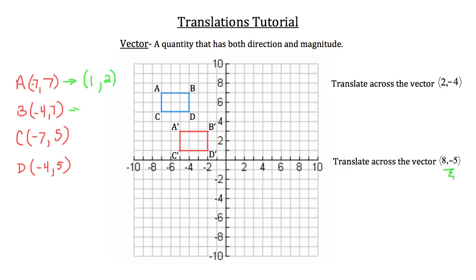Now let's do B: -4 plus 8 is positive 4, and 7 minus 5 is 2. For C: -7 plus 8 is positive 1, and 5 minus 5 is 0. And for point D: -4 plus 8 is positive 4, and 5 minus 5 is 0. Now that we have the new points for A, B, C, and D, let's plot them on our graph.